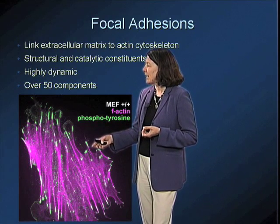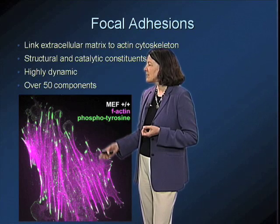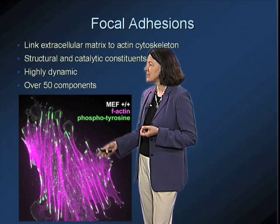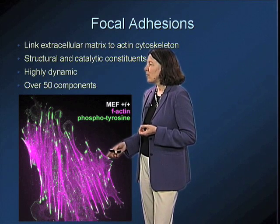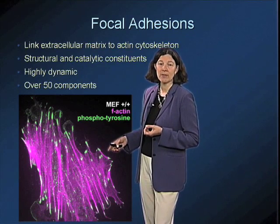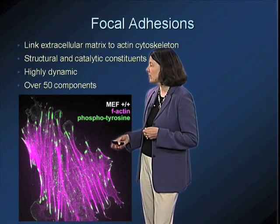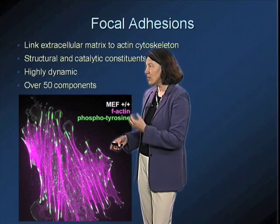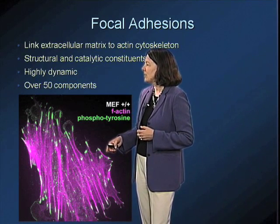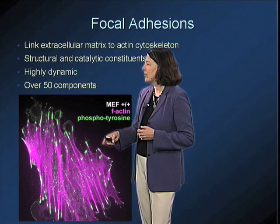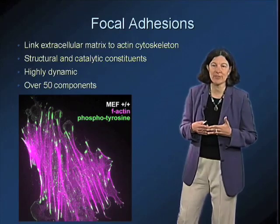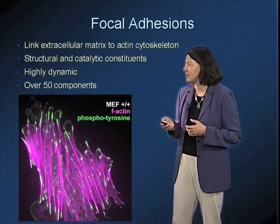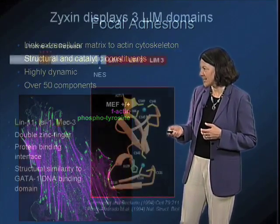Here we're labeling the cell with an antibody directed against phosphotyrosine, and you can see that these bright patches where phosphotyrosine is accumulated represent the focal adhesions, where integrins would also be concentrated, and where there's a very close connection with the ends of the actin filaments — the stress fibers that terminate at these sites.